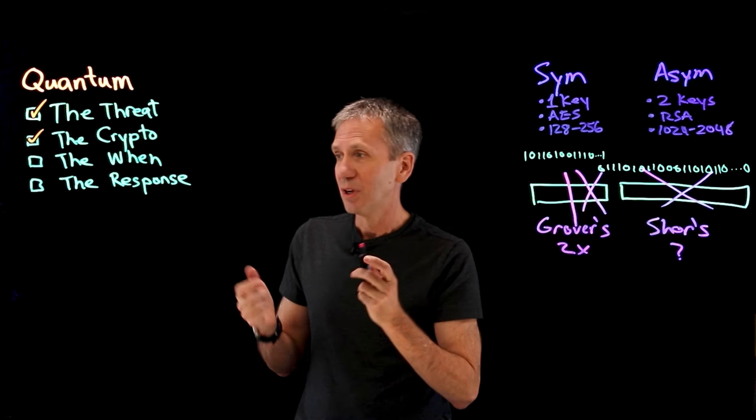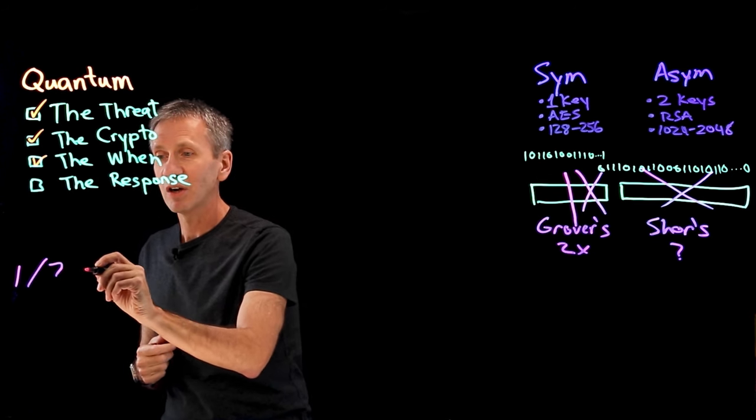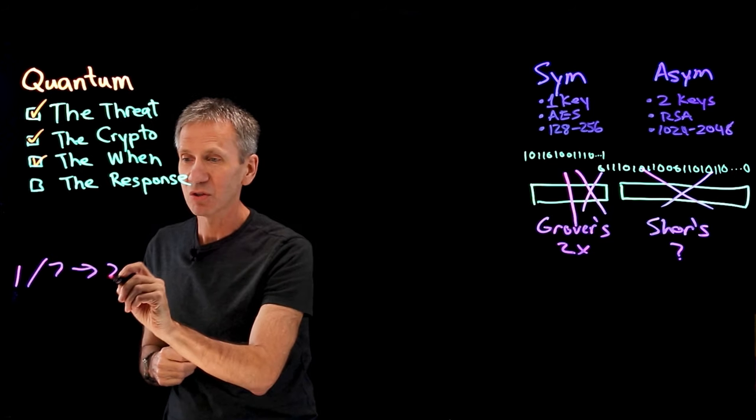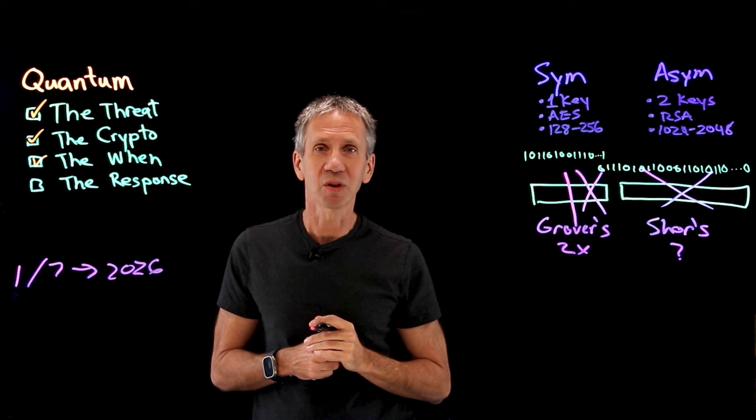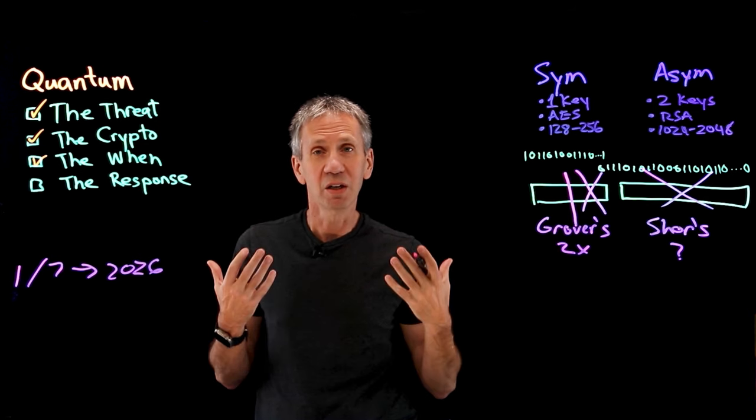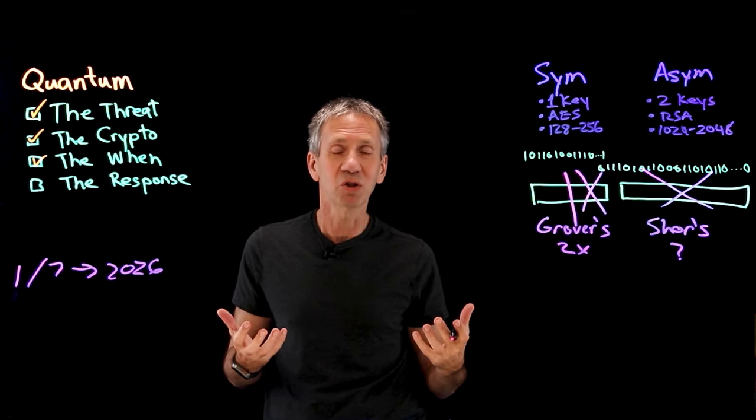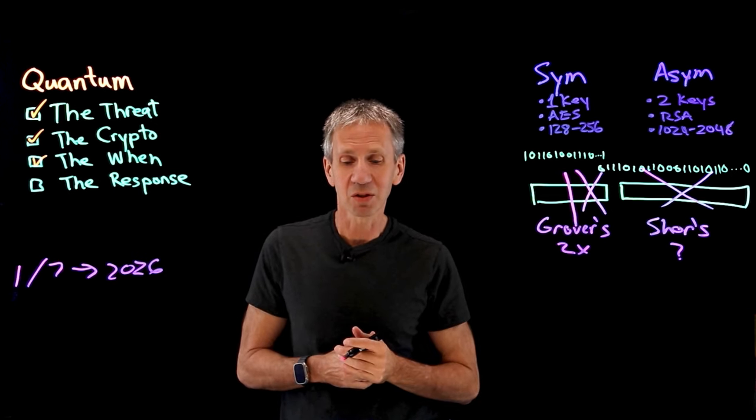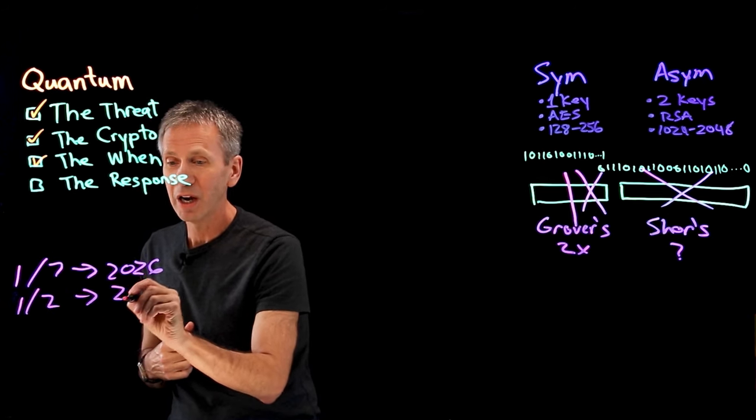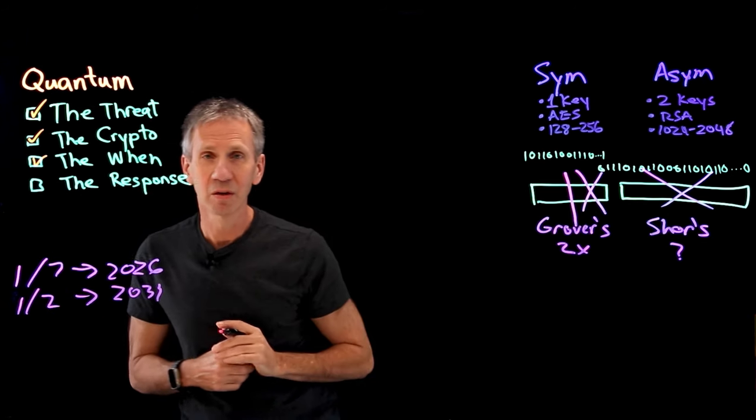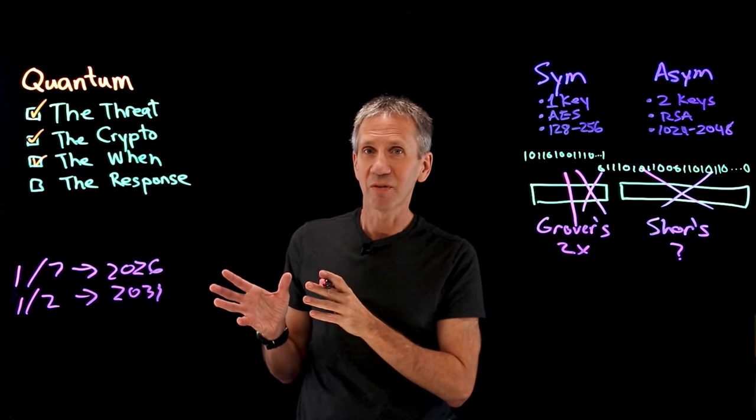But if we look into the future, crypto experts tell us, for instance, some of the projections are that there's a one in seven chance that by the year 2026 we'll be able to break these asymmetric algorithms with Shor's algorithm using a quantum computer that has enough qubits. That is a relative measure of the power of the quantum system. Further, the numbers look like it's one in two by the year 2031.